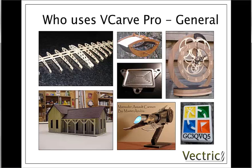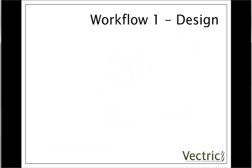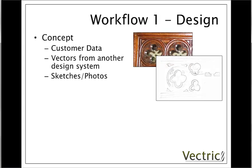Now we've talked about what the software can do and we've given you an idea of the type of things people make. What I'd like to do now is explain the working process in order to get from your design to the finished part on the CNC. The first stage of our process is the design, and this in itself is broken up into a number of smaller stages, the first of which is developing the concept.